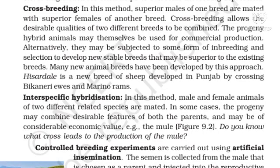Crossbreeding. In this method, superior males of one breed are mated with superior females of another breed. Crossbreeding allows the desirable qualities of two different breeds to be combined. The progeny hybrid animals may themselves be used for commercial production. Alternatively, they may be subjected to some form of inbreeding and selection to develop new stable breeds that may be superior to the existing breeds. Many new animal breeds have been developed by this approach. Hissardel is a new breed of sheep developed in Punjab by crossing Bikaneri ewes and Merino rams.